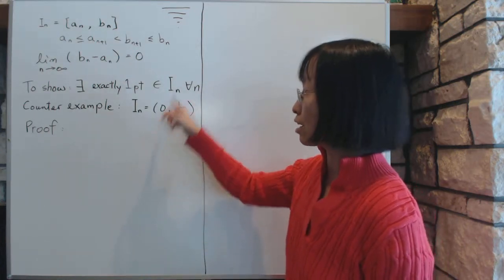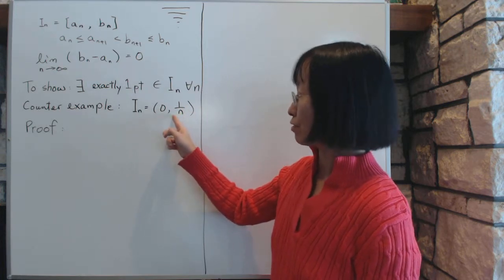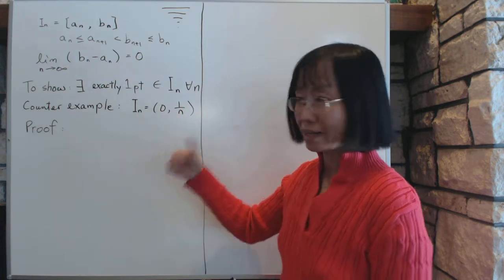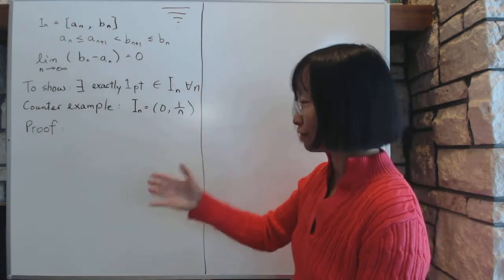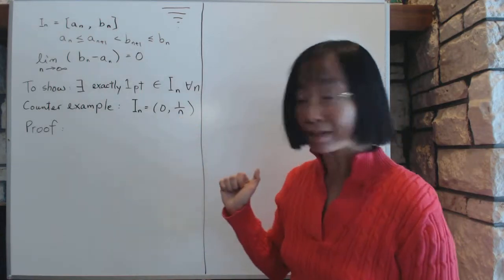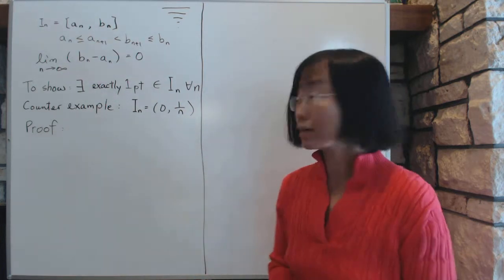Because any number you can think of that belongs to some of this interval will eventually be kicked out when n becomes large enough. One over n will be small enough and smaller than the number you think of. So then it's out. So then the interval absolutely must be closed.